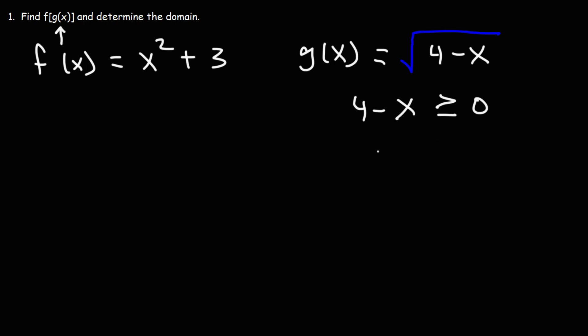When dealing with square roots, you can't have a negative number inside, so the inside part 4 minus x has to be greater than or equal to 0. Subtracting 4 from both sides, negative x is greater than or equal to negative 4. Multiplying both sides by negative 1, x is less than or equal to 4. Remember: when you multiply or divide both sides of an inequality by a negative number, you must change the direction of the inequality.